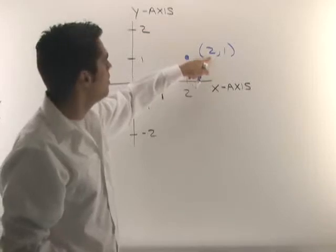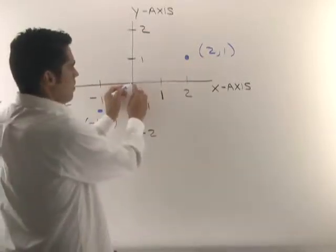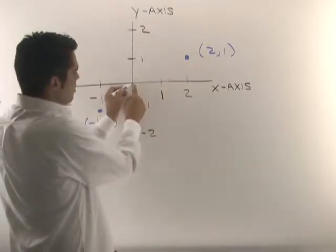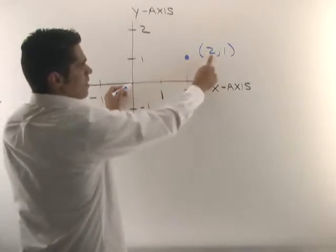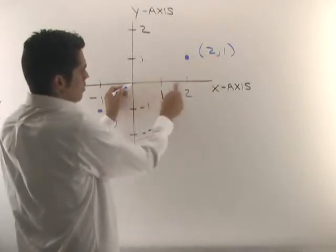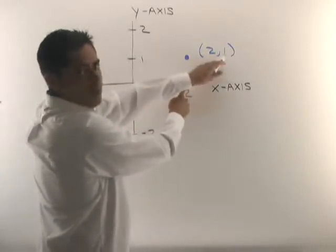start at the origin. You go on your x-axis two units—one, two—and then the next number is your y-coordinate, and this tells you how far to move on the y-axis. In the y-axis direction, it's one